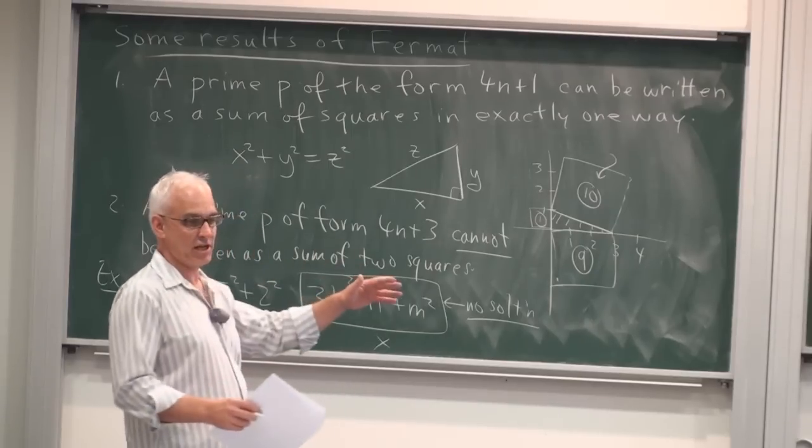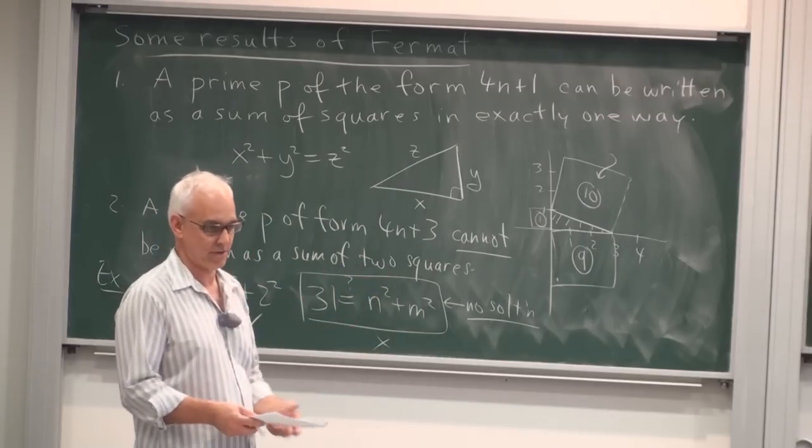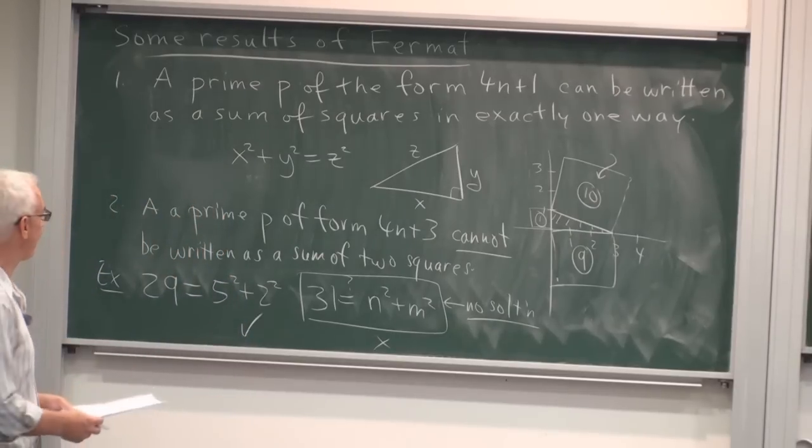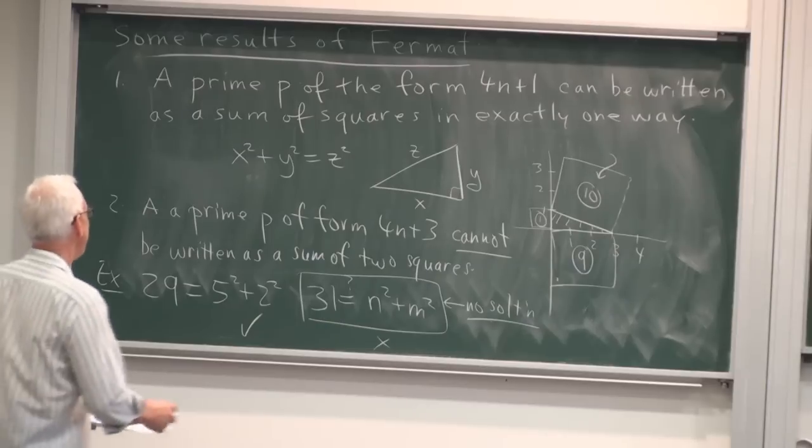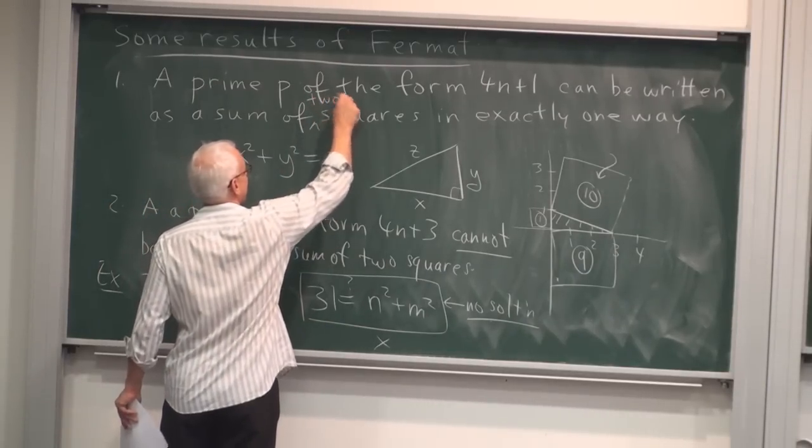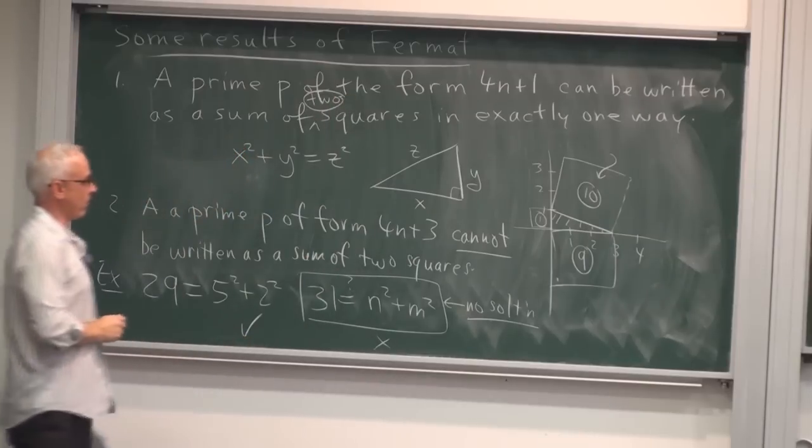So for example, if we take a prime of the form 4n plus 1, so that's one more than a multiple of 4, for example, say 29, how would we write 29 as a sum of two squares? Well, it would be 5 squared plus 2 squared. On the other hand, if we take a prime of the form 4n plus 3, for example, 31, and we write it, or try to write it as n squared plus m squared, then you can go through all the possibilities, and none of them will work.